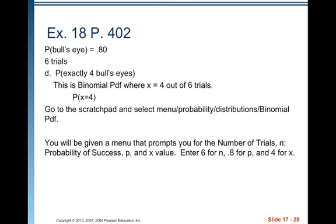For part D, we want to know the probability she gets exactly 4 bullseyes. So this is a binomial PDF where X equals 4 out of 6 trials. Why is it binomial? Because we're not saying that the first bullseye is on the fourth trial. We're saying that out of the six trials, she gets exactly 4 bullseyes. So we have to use binomial calculations. Luckily, our calculator will handle that for us. So we go to the scratch pad, select menu, probability, distributions, binomial PDF. You will be given a menu that prompts you to enter the number of trials N, the probability of success P, and the X value. So enter 6 for N, 0.8 for P, and 4 for X. So you get that the probability that X equals 4 is 0.24576.